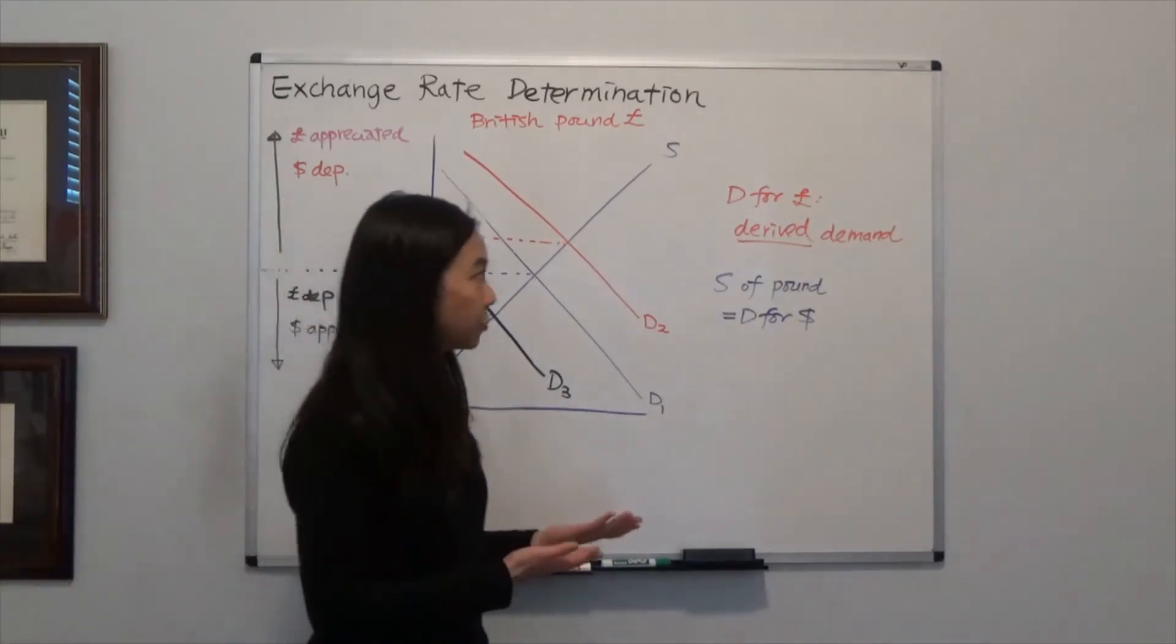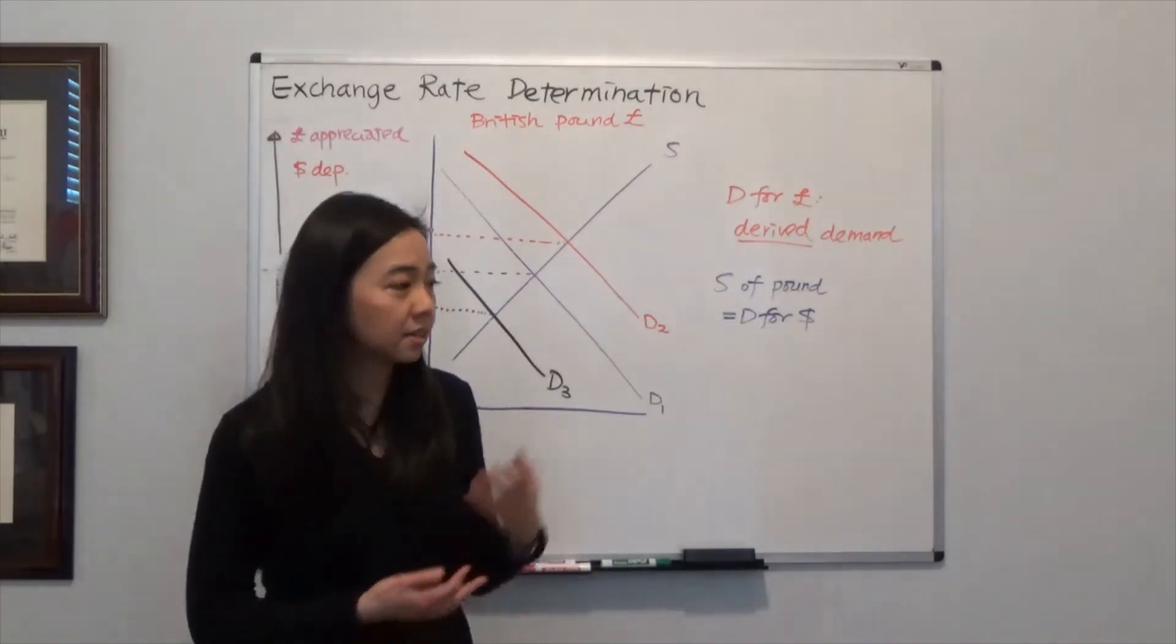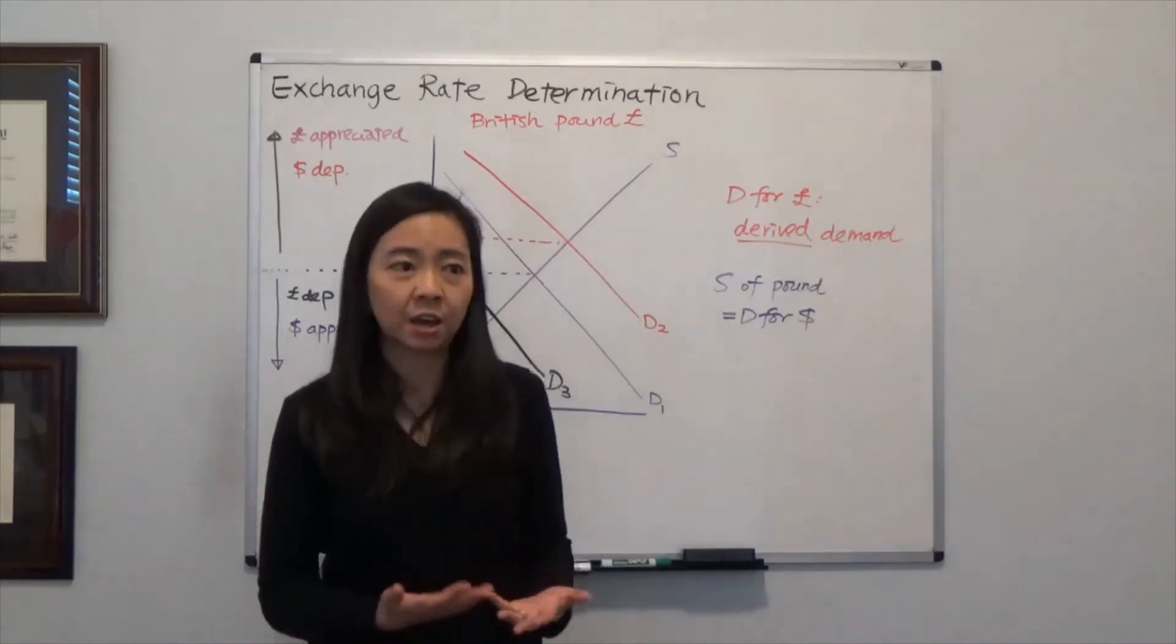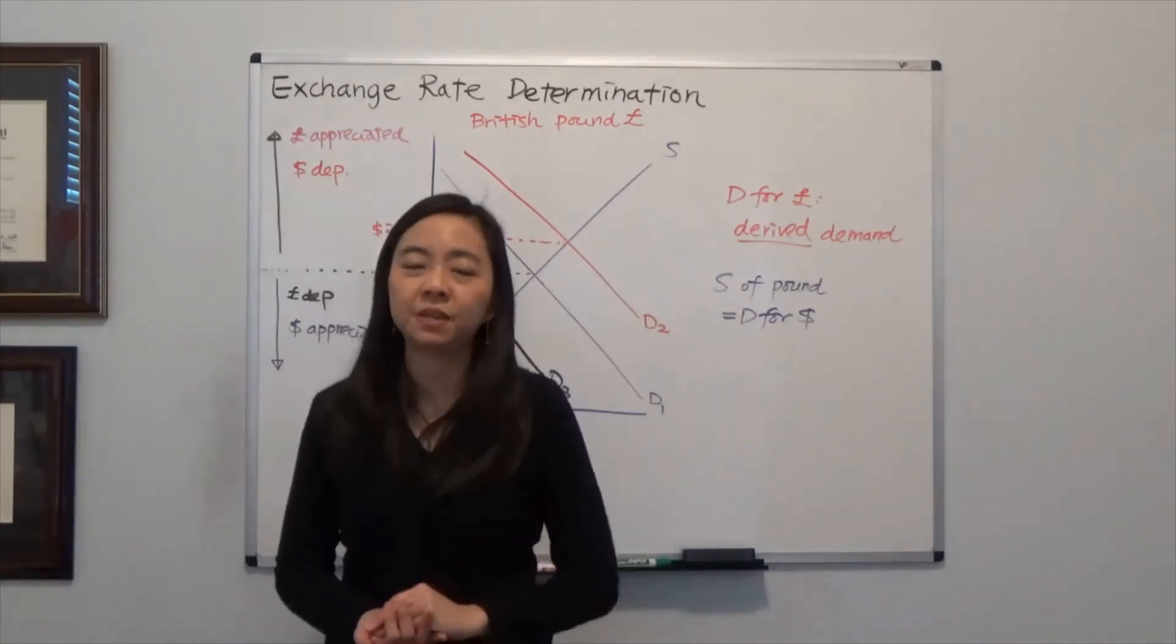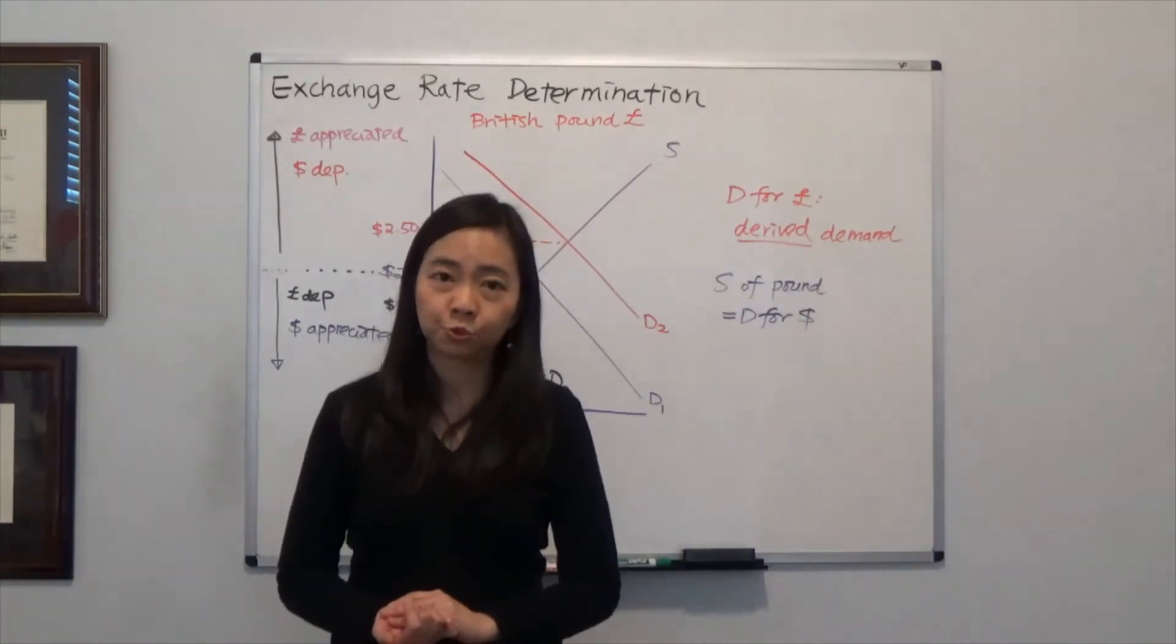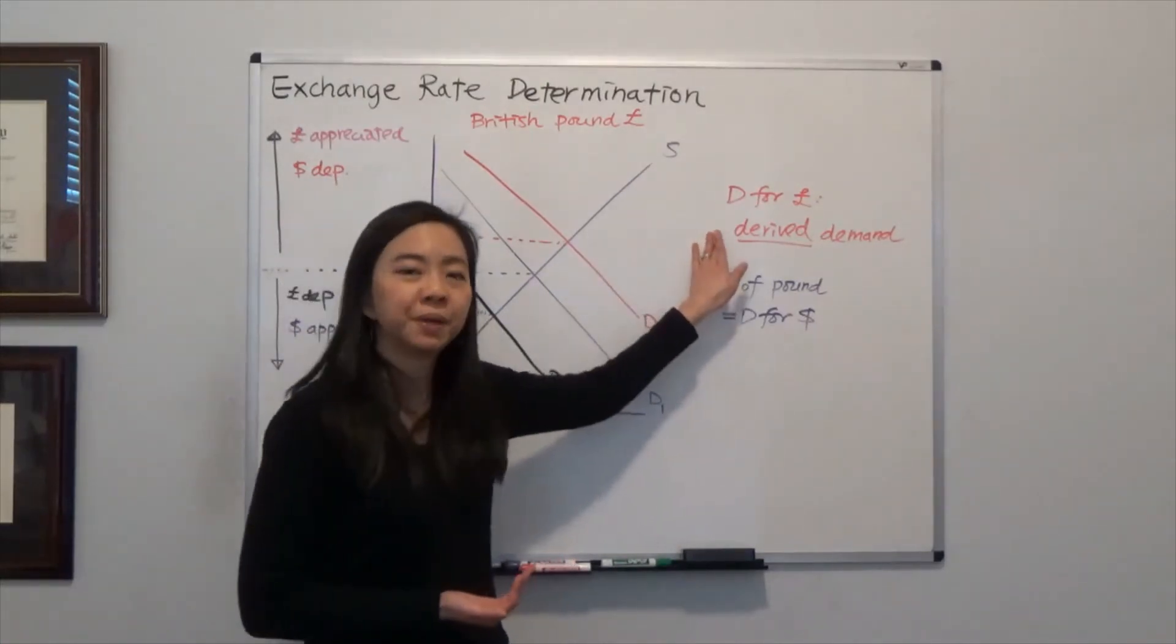Remember that the demand for the Pound is a derived demand, meaning you want to buy British Pounds because you have some purpose for them. Maybe you want to invest in a British firm, travel to the UK, or study there. We call that a derived demand.